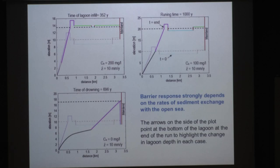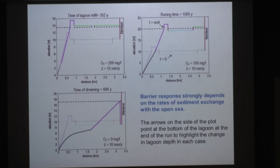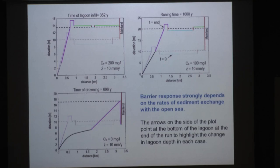We also examined sediment exchange from the lagoon to the open ocean. With very small exchange — where almost all fine sediments remain in the lagoon — we get marsh expansion until marshes fill the back barrier environment, resulting in very little landward barrier migration. If we increase export to the open ocean, landward migration rates increase significantly and we can even trigger barrier drowning simply by changing fine sediment exchange in the back barrier environment — an interesting result.